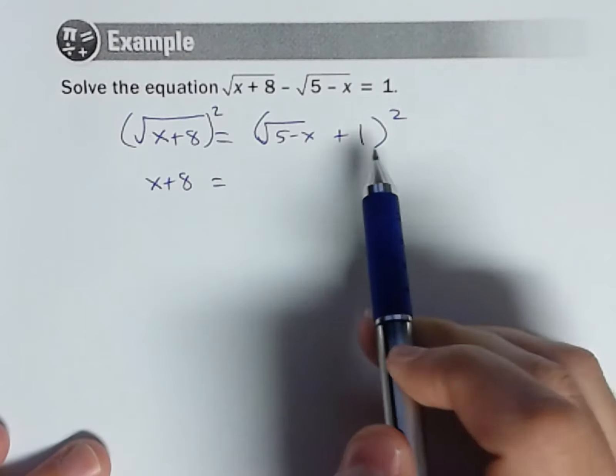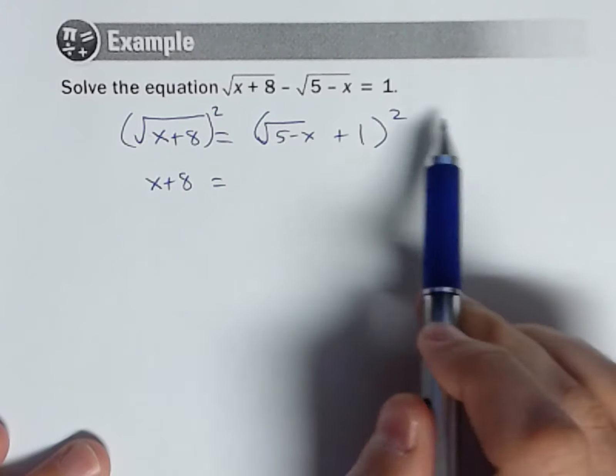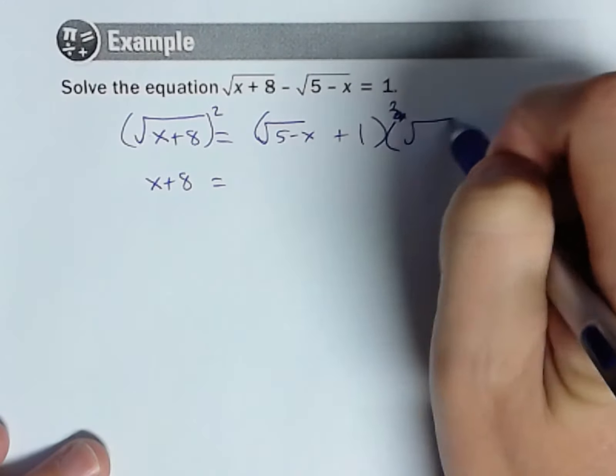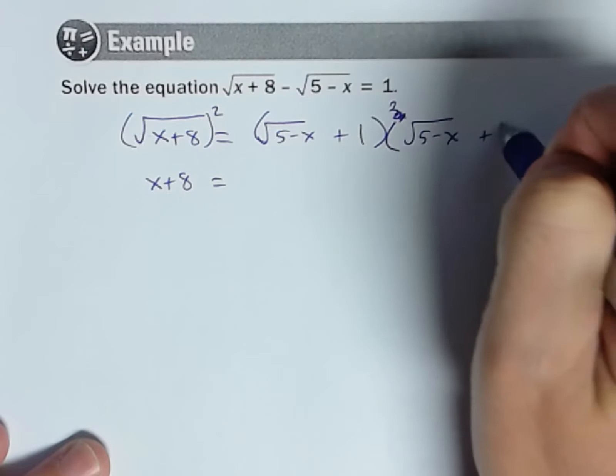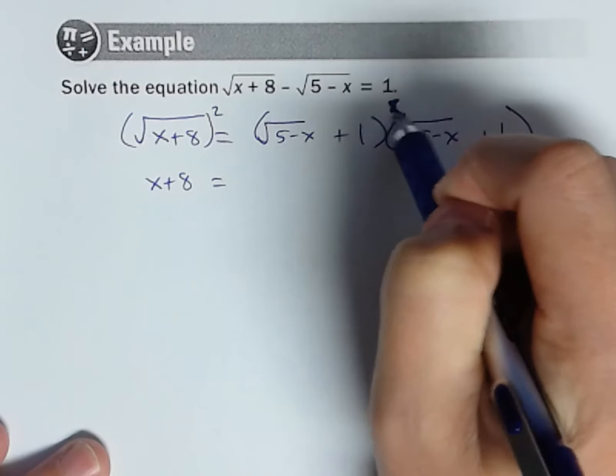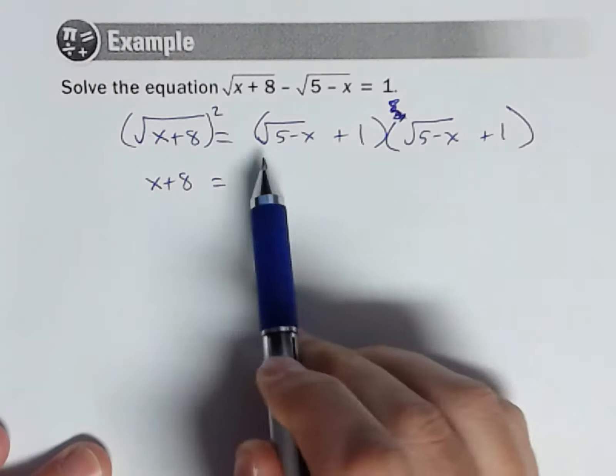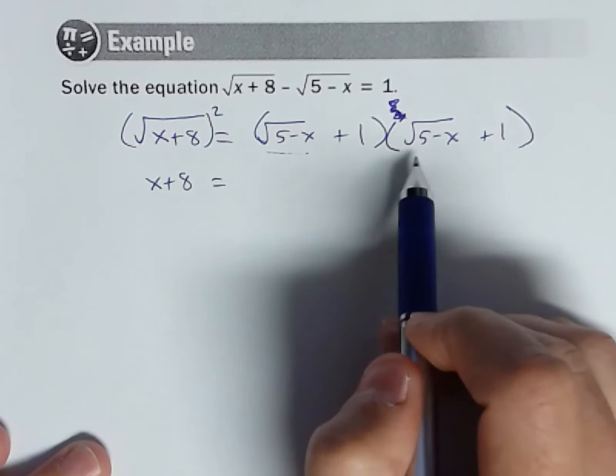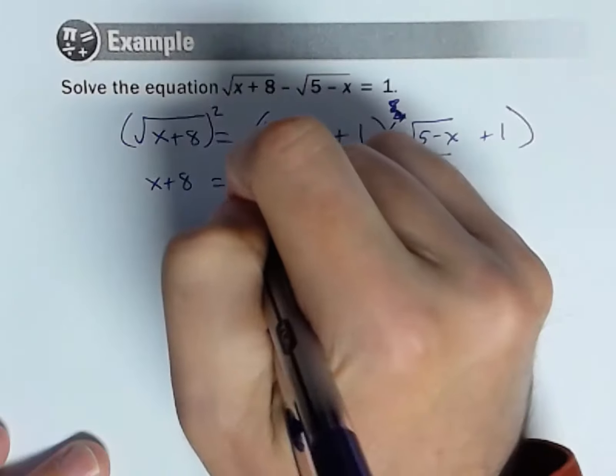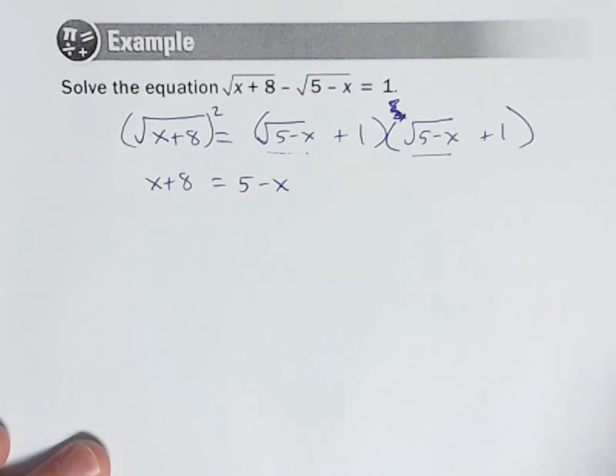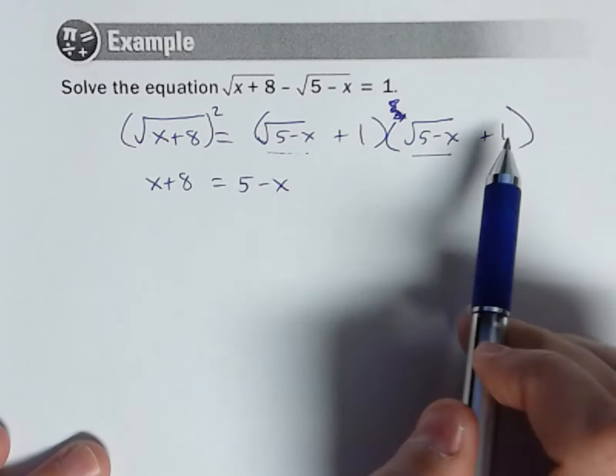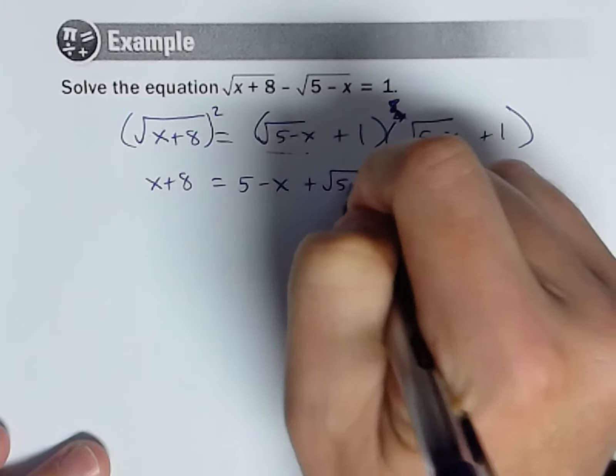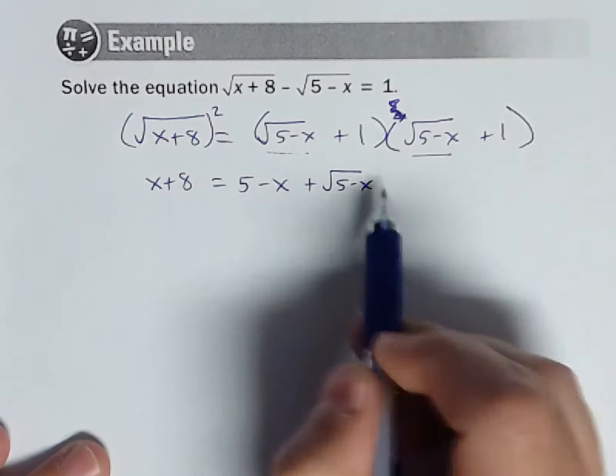Over here though, it's this times itself. In fact, I'm going to write that out. I think that will help you see it. 5 minus x plus 1, so that's the same as squared, right? So you have this times this. So when I do this times that, that radical will go away. I would get 5 minus x. When I do this radical times 1 though, I'm going to get plus square root of 5 minus x. So notice there's still a radical.